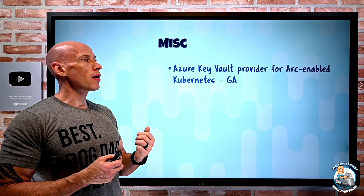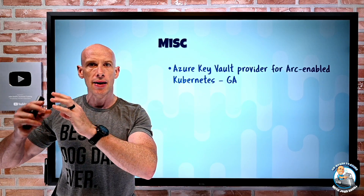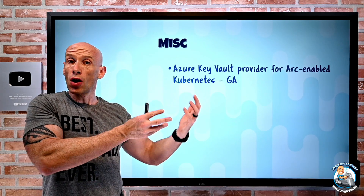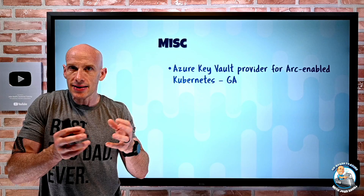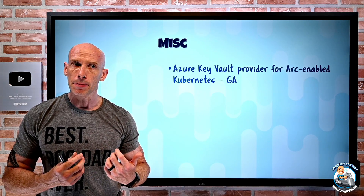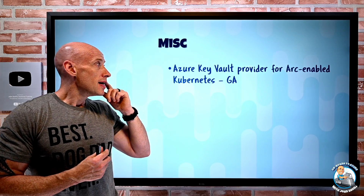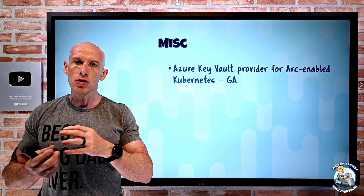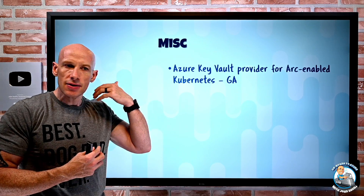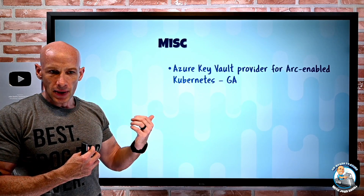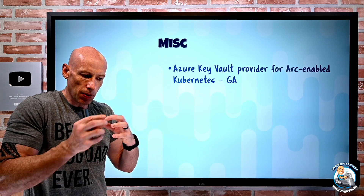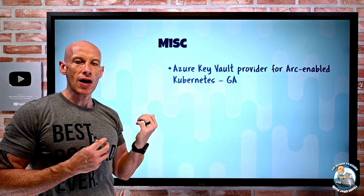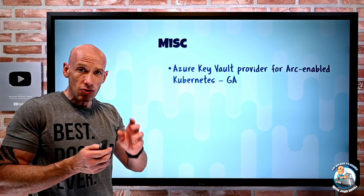Azure Key Vault Provider for Arc-enabled Kubernetes is now available. Arc is all about taking the Azure control plane and capabilities to other clouds and on-premises — including any CNCF-compatible Kubernetes through Arc enablement. Once enabled for Arc, you can get an Azure Key Vault Provider that makes it easy for workloads running in pods on that Kubernetes environment to fetch secrets, keys, and certificates from Azure Key Vault. A service principal is involved in the configuration, but the secrets are kept in Key Vault and accessed simply — mounted just like any other part of the file system.